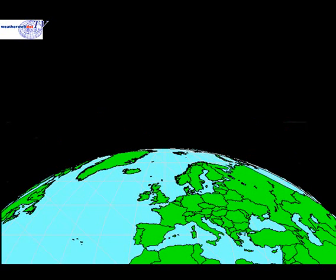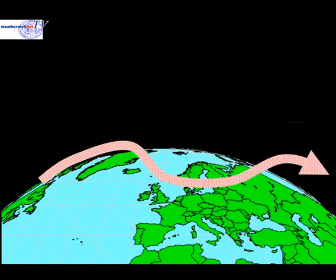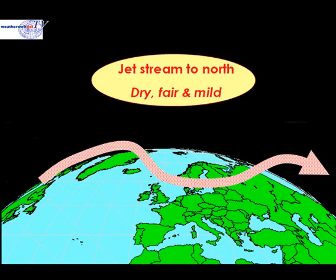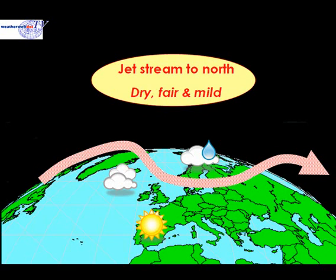Let's look at how the position of the jet stream affects the weather through the British Isles and Europe. If the jet stream is north of the country, then we are said to be on the warm side of the jet stream. This generally leads to dry, fair and mainly mild conditions. The best of any sunshine will always be across the southern parts of the country, whilst to the north, depending on how close the jet stream is, there could be more cloud and perhaps some light outbreaks of rain for northern Scotland, Orkney and Shetland. Much more unsettled conditions will be occurring across Scandinavia and the areas where the jet stream is flowing over.